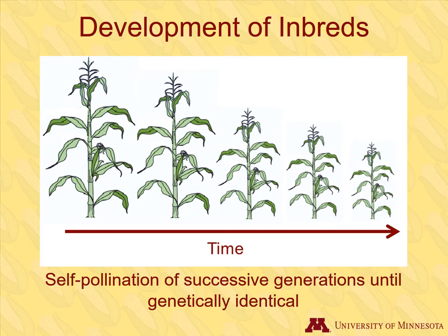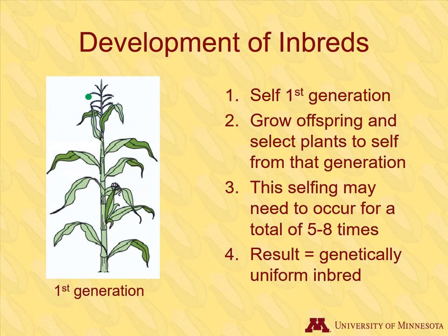The development of inbreds today is very similar to how it was done in the past. Breeders self-pollinate successive generations until offspring are genetically identical. There are many steps of selfing plants and growing them for seed to develop inbreds. The first generation is self-pollinated. Offspring are selected, and that generation is also selfed.